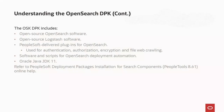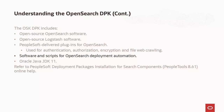The OSK DPK includes the Oracle OpenSearch and OpenSearch Dashboard software, the open-source Logstash software, PeopleSoft-delivered plugins for OpenSearch — including plugins for authentication, authorization, encryption, and file web crawling — Python software and PeopleSoft-developed scripts that automate OpenSearch deployment, and Oracle Java JDK 11.